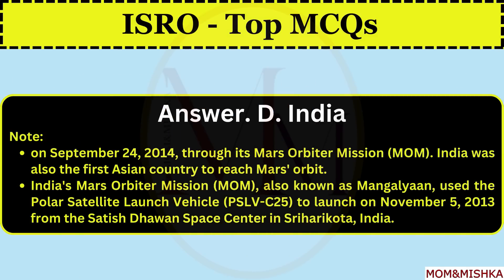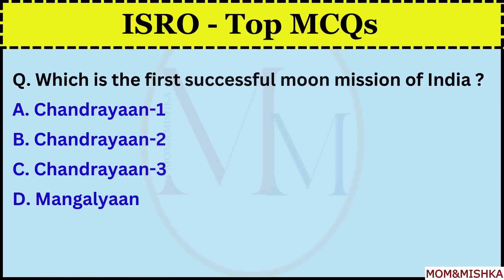India, option D. On 24 September 2014, through its Mars Orbiter Mission, India was also the first Asian country to reach Mars orbit. India's Mars Orbiter Mission, also known as Mangalyaan, used the Polar Satellite Launch Vehicle C-25 to launch the satellite on 5 November 2013 from the Satish Dhawan Space Center in Sriharikota. Which is the first successful moon mission of India?